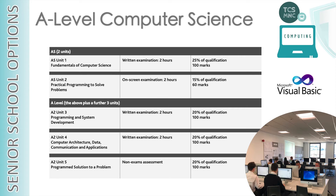The last unit, Unit 5, is the Programme Solution to a Problem. This is a non-exam assessment — it's a coursework project. You get to decide what your project is based upon, guided by your teachers. Then you work through that problem from scratch: you research how the problem starts, then you move through to prototyping an actual programme using VB and creating a final product that you will evaluate and test.